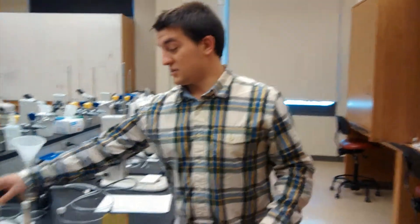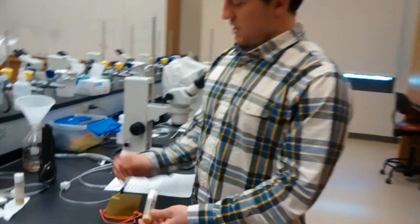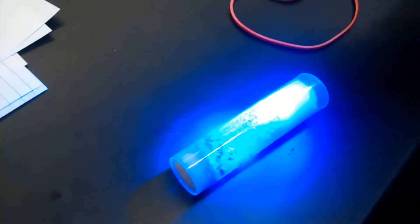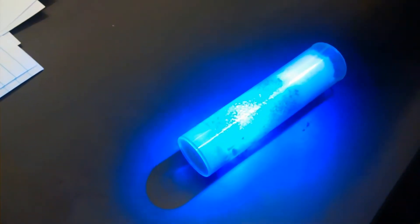Now we have a sample here of Gal4 UAS flies and they're labeled with GFP. If we shine this light on them, you can't see anything. But with GFP excited, and now if we add a filter, you can see that the flies are fluorescing. See that?